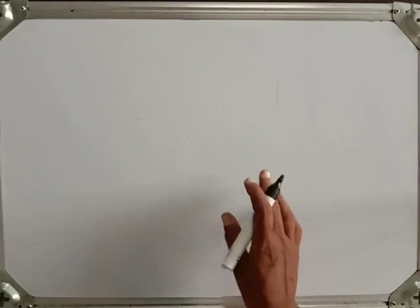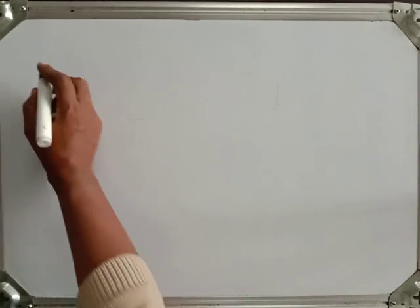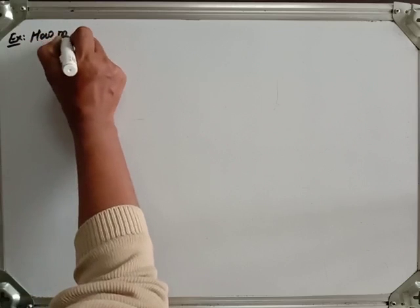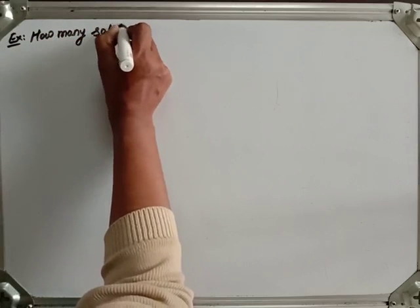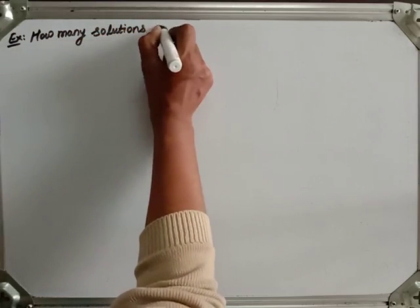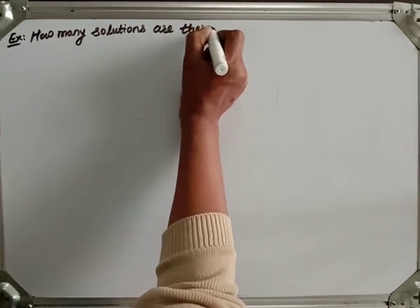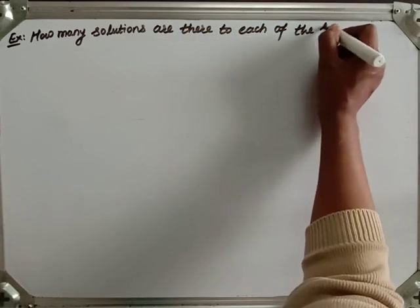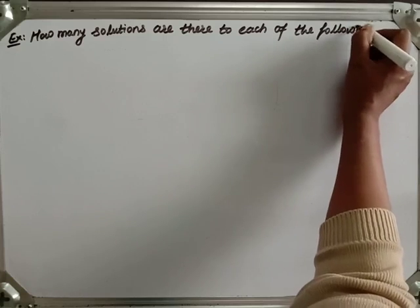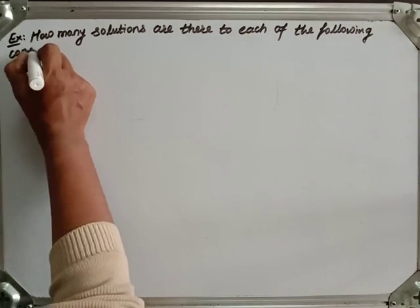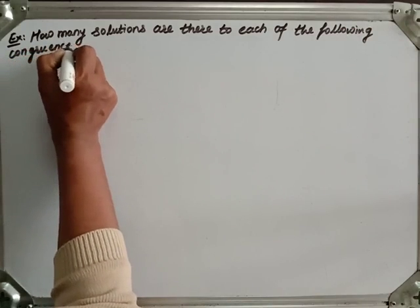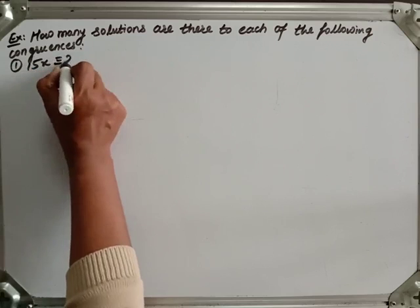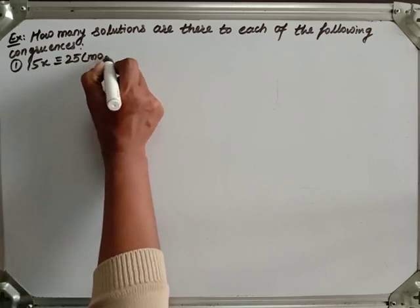Hello students. Now in this video let us see examples on solution of linear congruences. So let's take the example. How many solutions are there to each of the following congruences? The first one is 15x congruence to 25 modulo 35.